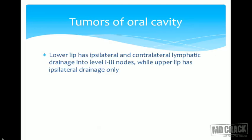The lower lip has ipsilateral and contralateral lymphatic drainage into level 1, 2, and 3 nodes. The upper lip has only ipsilateral drainage — no contralateral drainage for the upper lip.